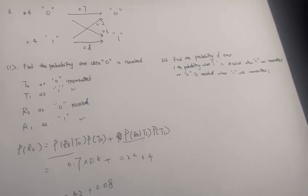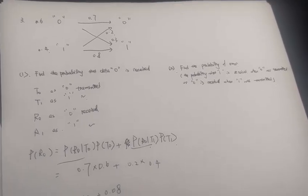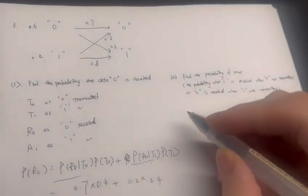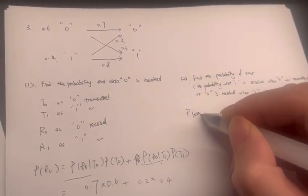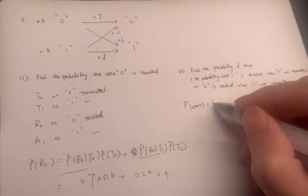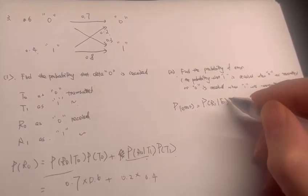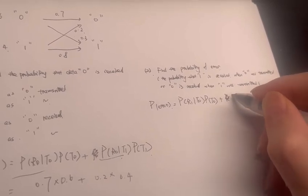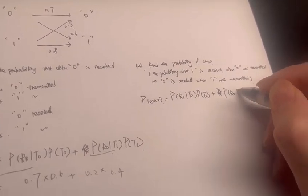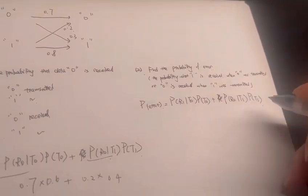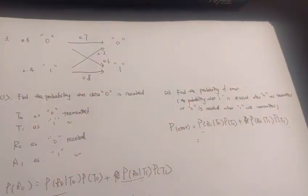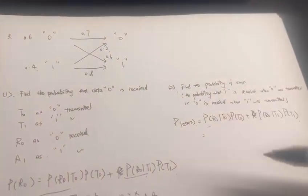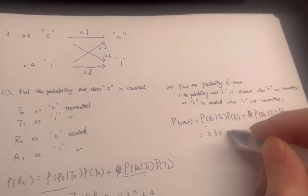The second question asks us to find the probability of error, which means the probability that one is received when zero was transmitted, or zero is received when one is transmitted. There are also two conditions: the first is one is received given zero is transmitted, plus the second condition that zero is received given one is transmitted.